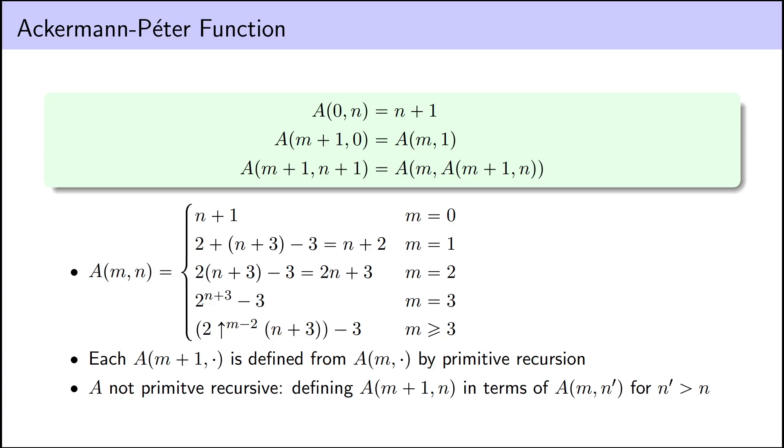However, the Ackermann function as a whole, as a function of M and N, is not primitive recursive. Right? For fixed M, it is primitive recursive. But when we combine all of these functions together, when we have a function A that takes in both an M and N as inputs, the resulting function is not primitive recursive.